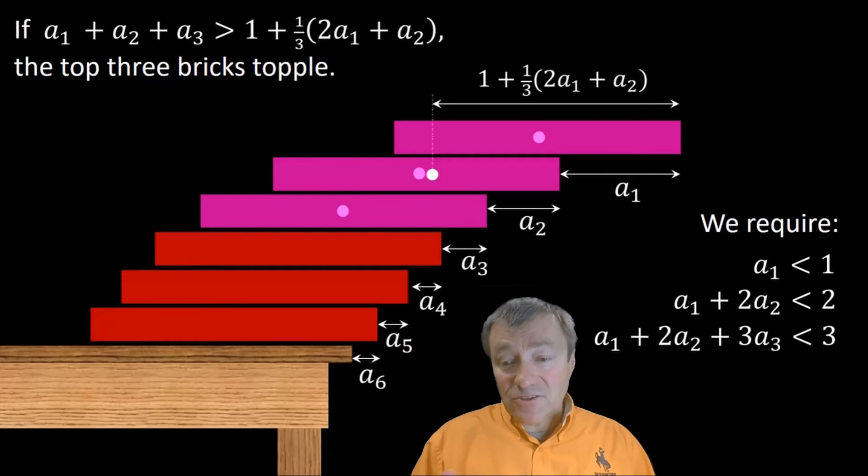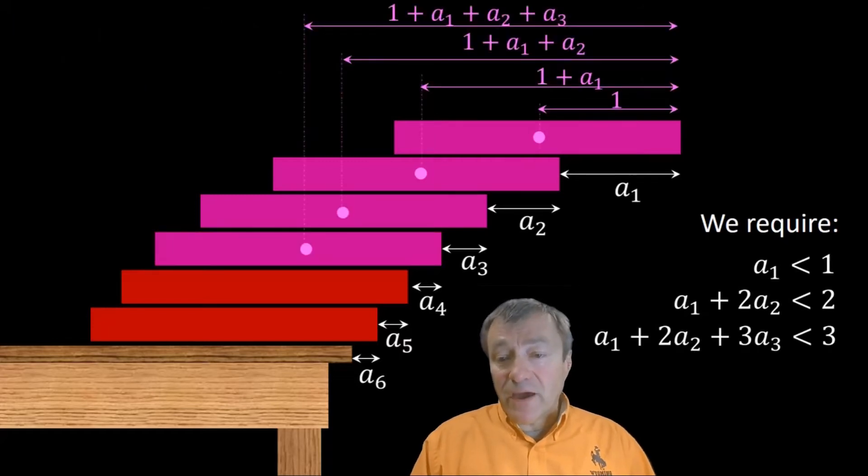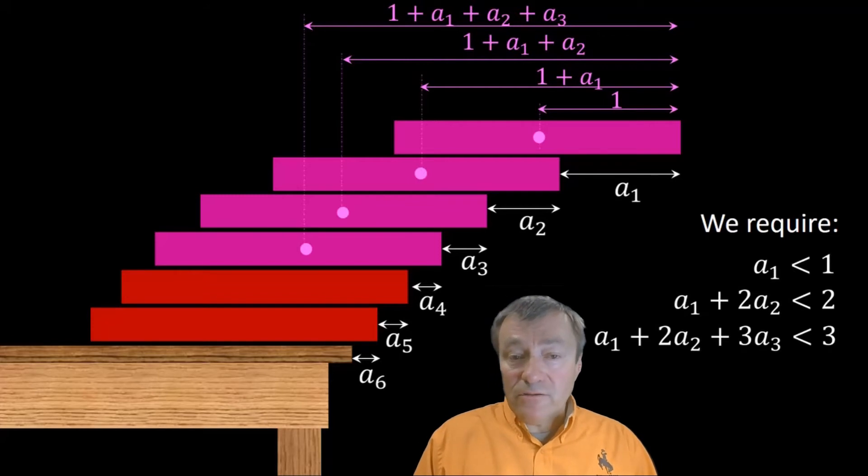On the right side of the screen, you're starting to see these conditions accumulate. You can see a pattern here. These are the conditions that, taken together, will guarantee the top brick doesn't fall over, the top two bricks don't fall over, and the top three bricks together don't fall over. Now, you should be able to see the pattern, and I'll do one more, just to make sure, and just for practice.